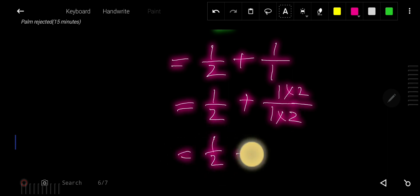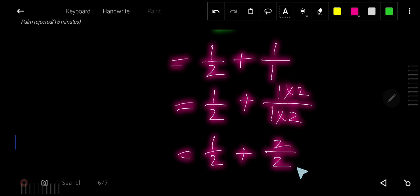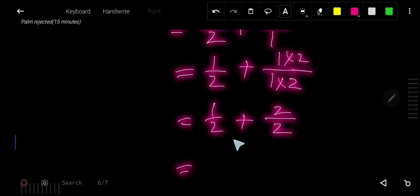Now, half plus 2 over 2. So now we have got the same denominator, right? Now add the numerators.